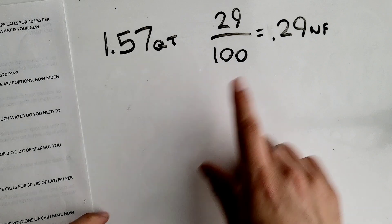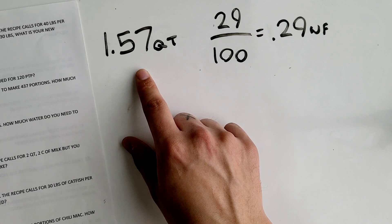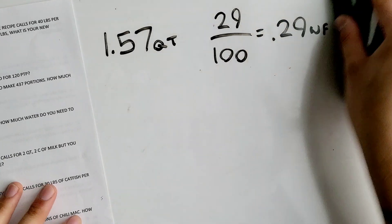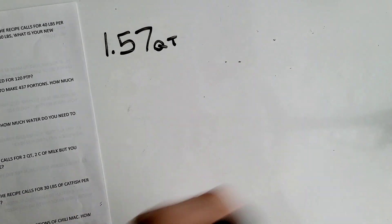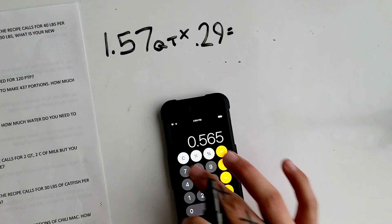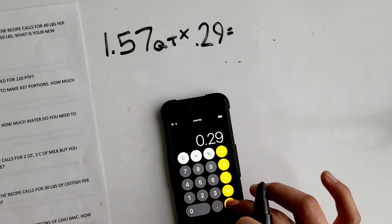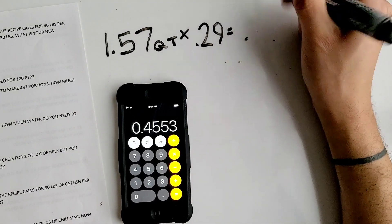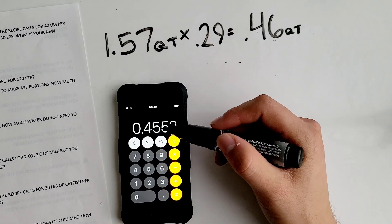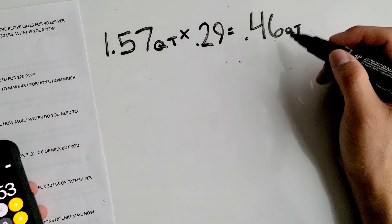Now we multiply the working factor by our quarts amount to find how much water we need for 29 portions. So 1.57 times 0.29 — since the third digit is 5 we round up — equals 0.46 quarts.